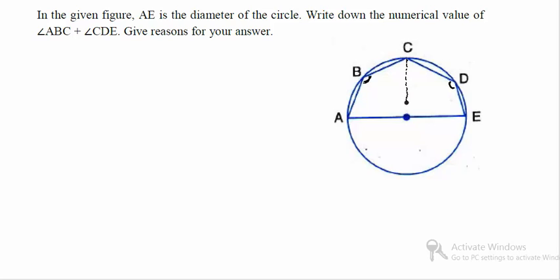If you join C with center, let us call center as O. Then if you join CO, then this angle, if this angle is equal to 2x, then the angle subtended by this same chord AC. This 2x angle is subtended by the chord AC, right, at the center.